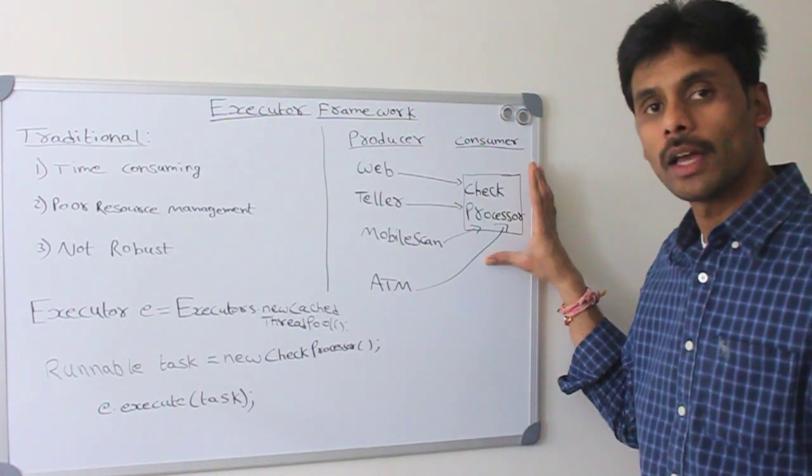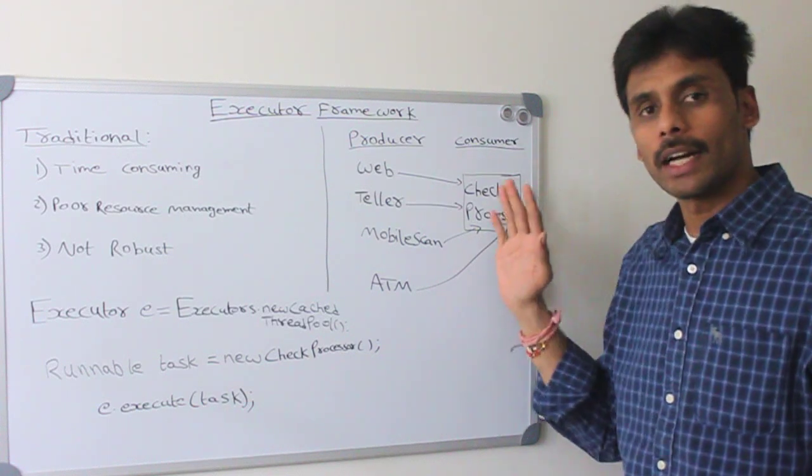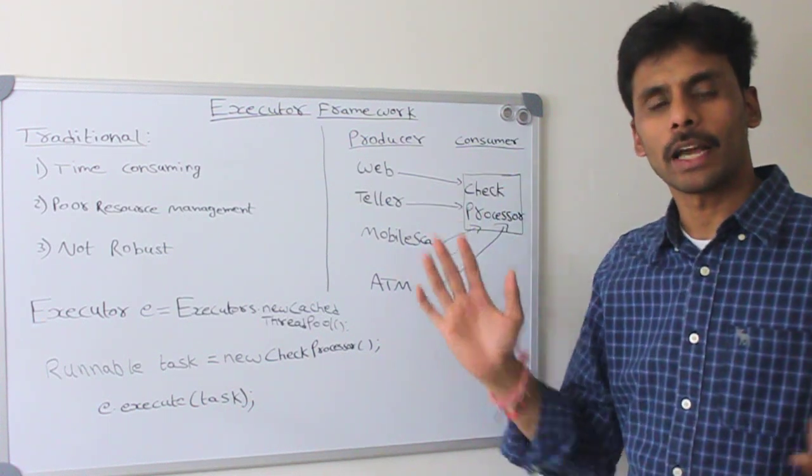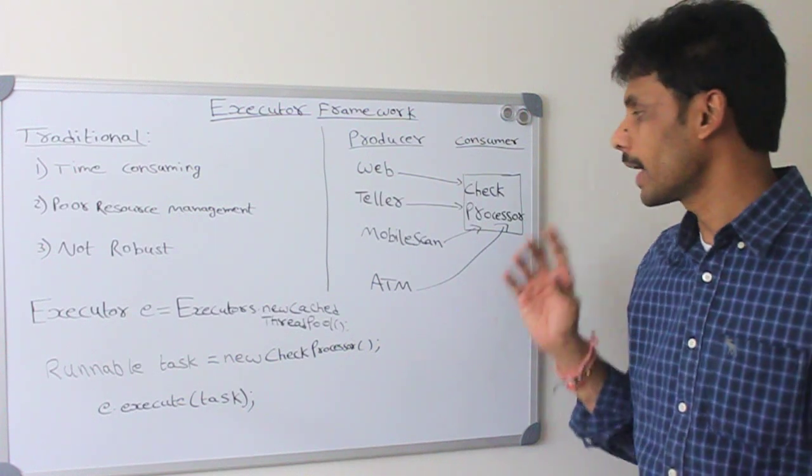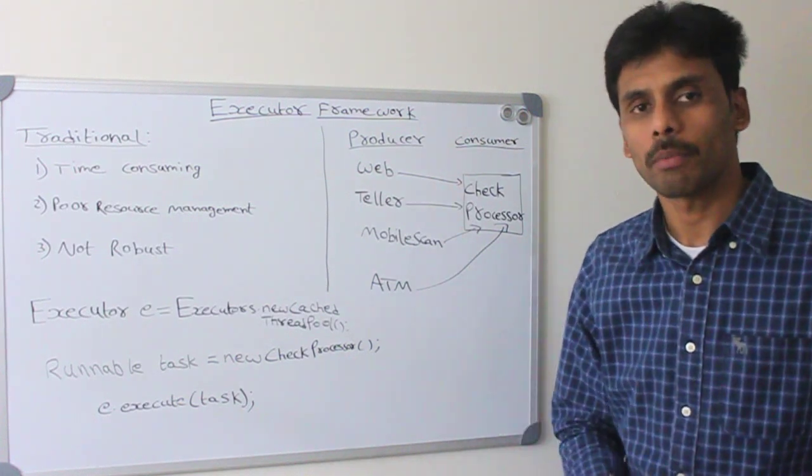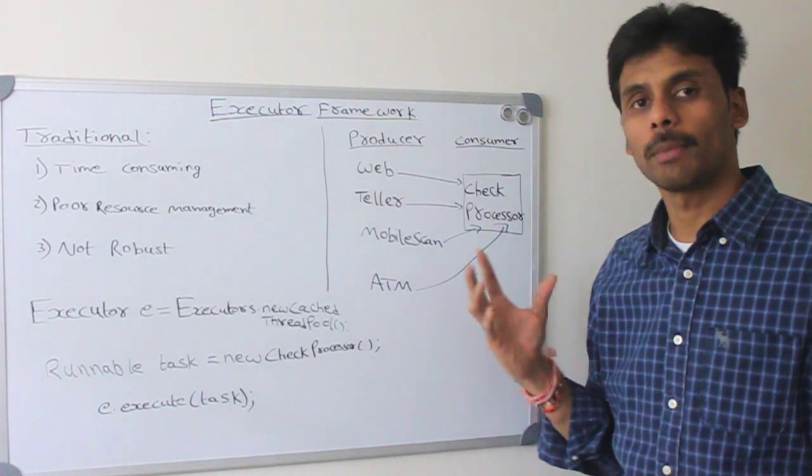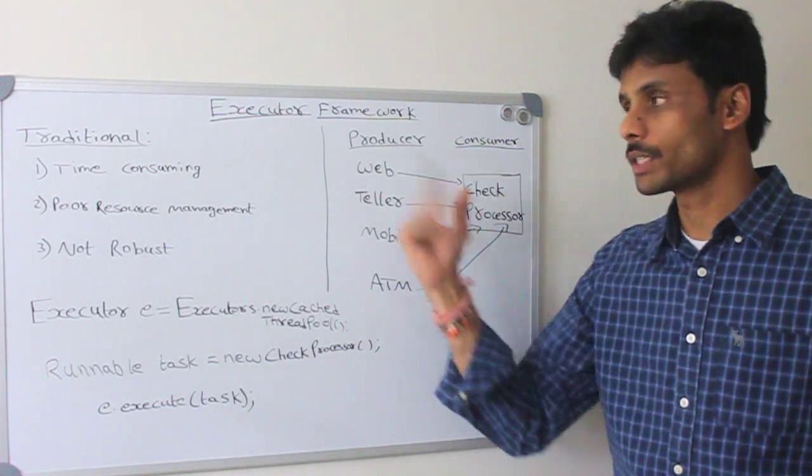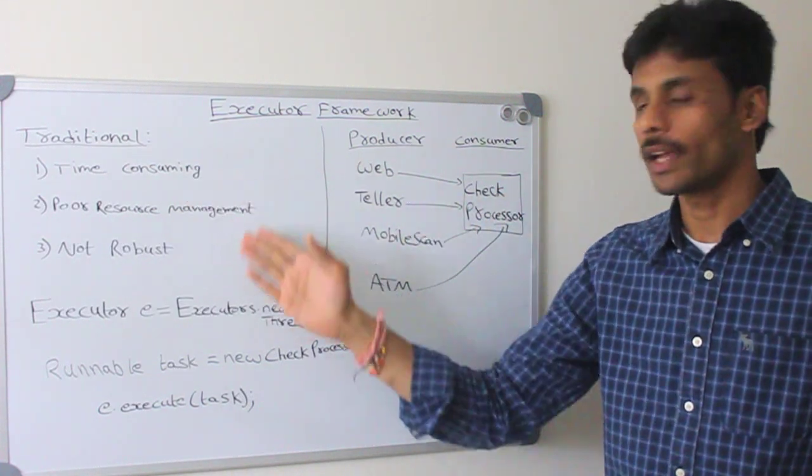So our check processing application, we want to develop a multi-threaded application so that it can be scaled across machines and also it can make the best use of the processor. If we create this using the traditional multi-threading approach without the executor framework, we have the following limitations.